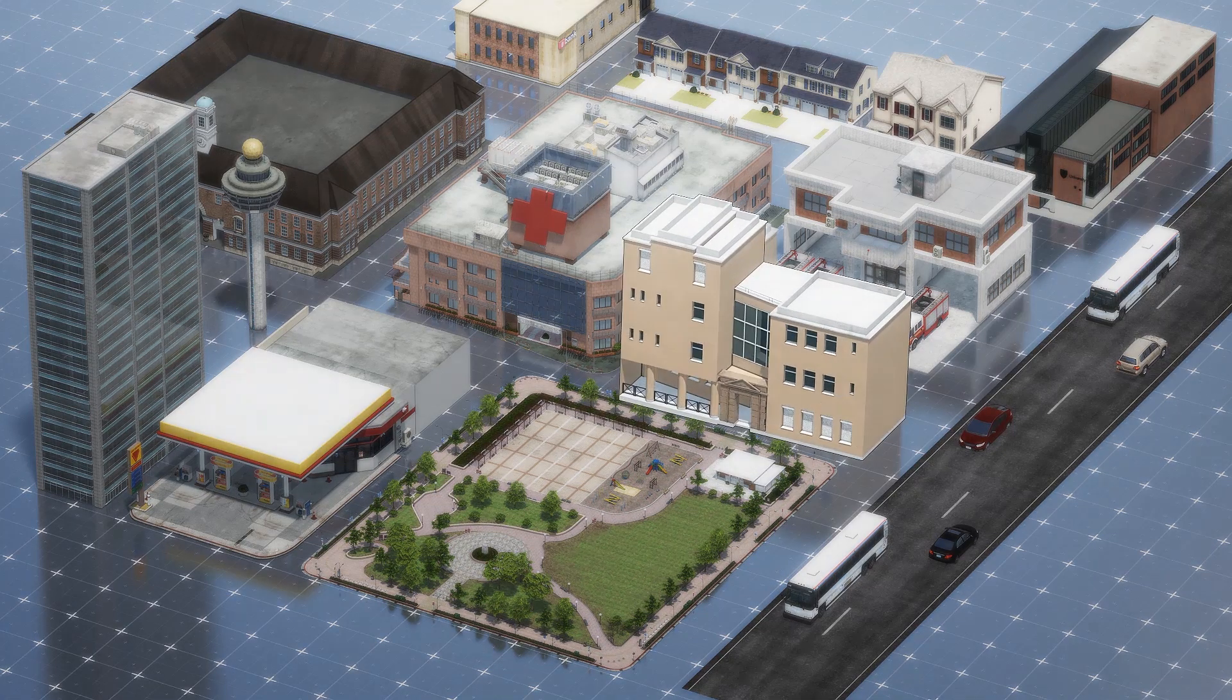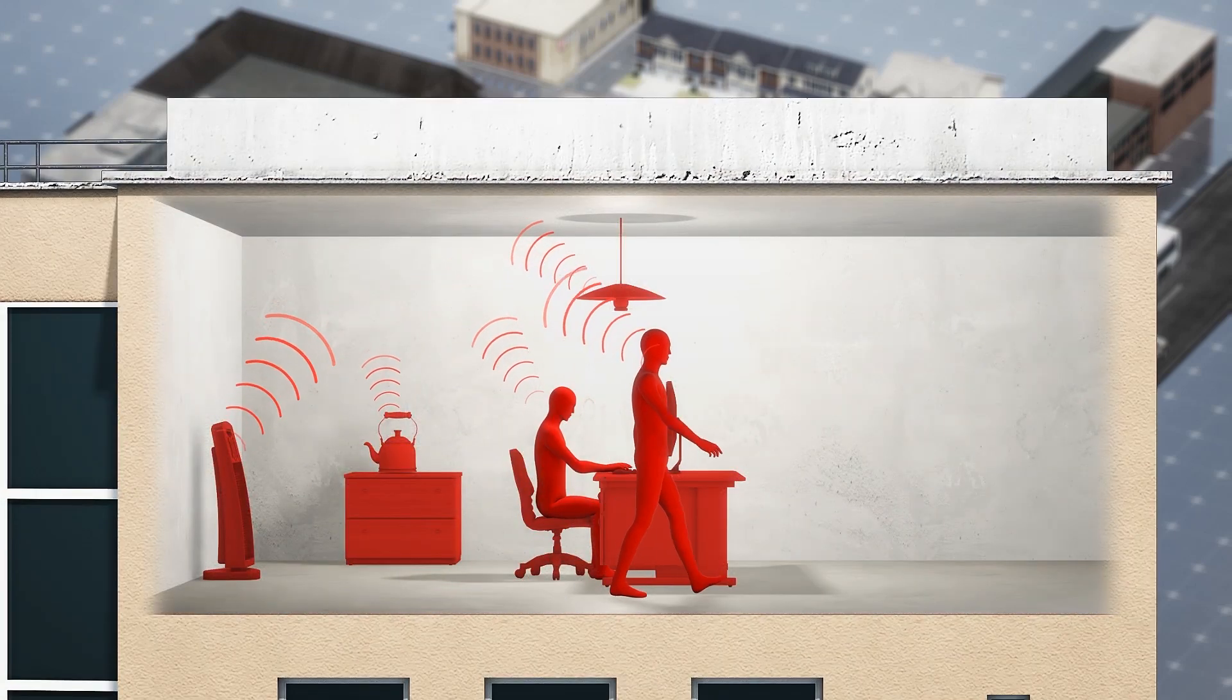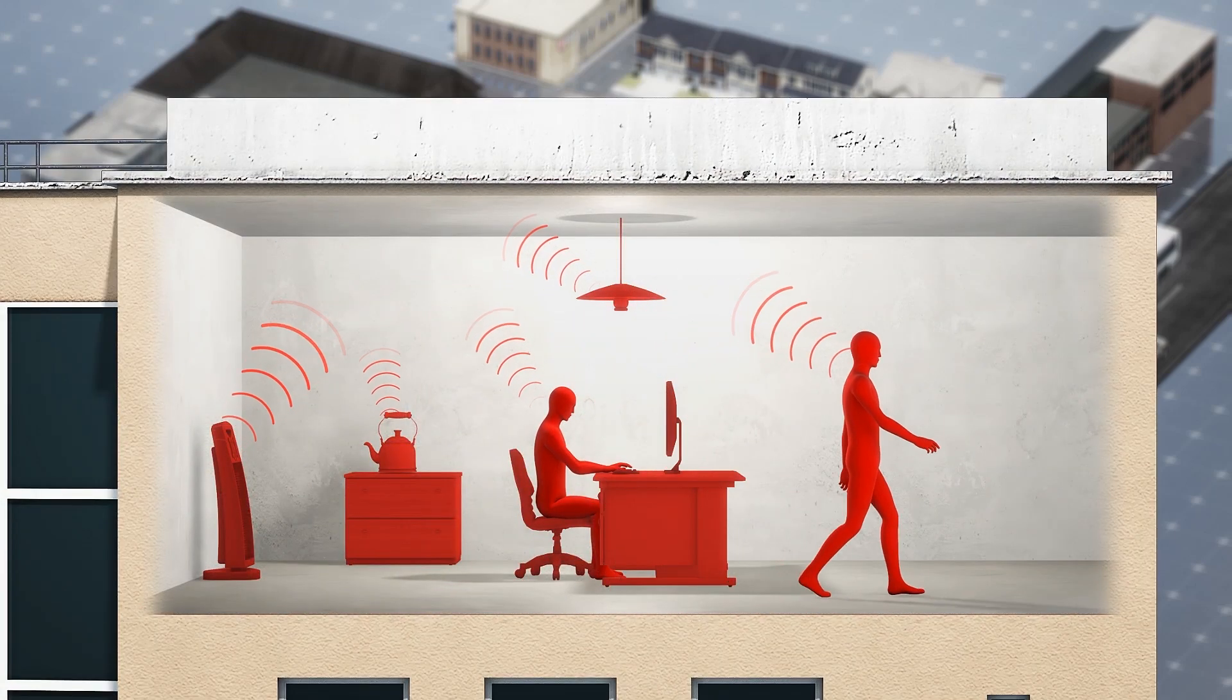The project, run by British space company Satellite Vu, will act as the planet's energy meter by selling heat data to organizations looking to cut wasted energy and power bills.